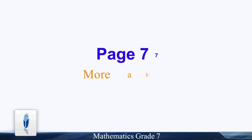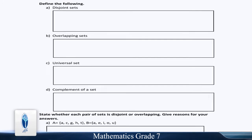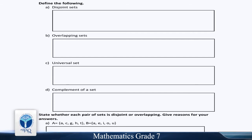More about Sets. Define the followings: Part A: Disjoint Sets. Part B: Overlapping Sets. Part C: Universal Sets. Part D: Complement of a Set.